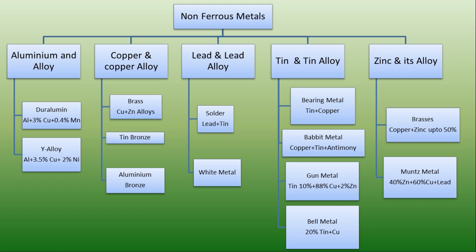The first lead alloy is what we call solder, which contains lead and tin. The second one is white metal. Next, tin and tin alloys. Tin is used for coating steels because of its good corrosion resistance. The first alloy of tin is bearing metal, which contains tin and copper — as the name implies, these alloys are used in manufacturing bearings.